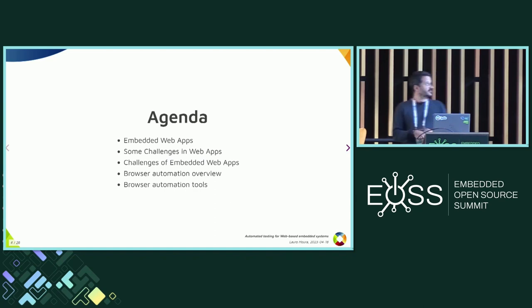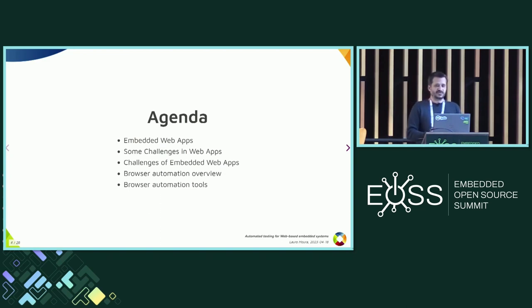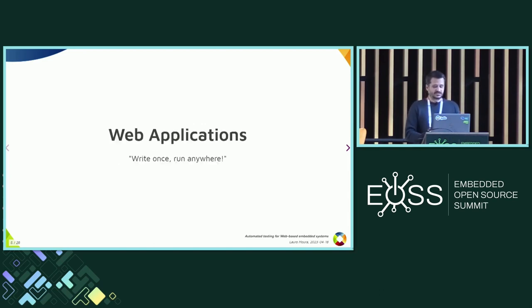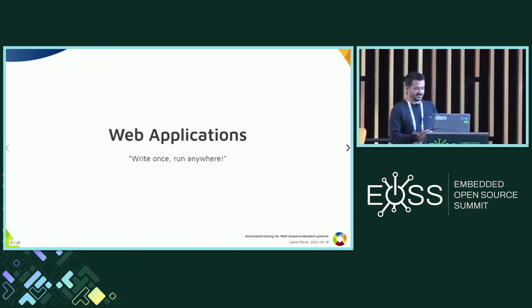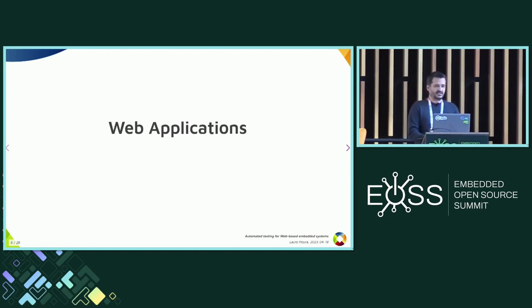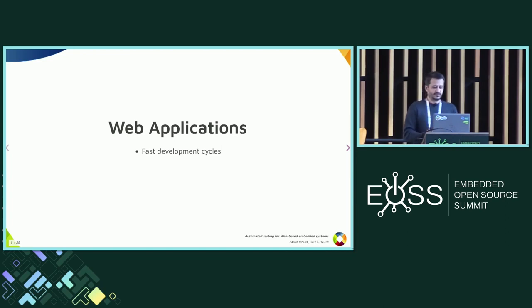Today we'll talk about what I mean by embedded web applications, some challenges we face developing and testing them, and how browser automation can help deal with those challenges. So why web applications? As my colleague Adrian mentioned in yesterday's talk, web applications are eating the world — they're growing everywhere because they enable fast development cycles. Even with the added complexity of today's JavaScript tooling, it's still very fast to develop new applications. It also enables fast deployment.